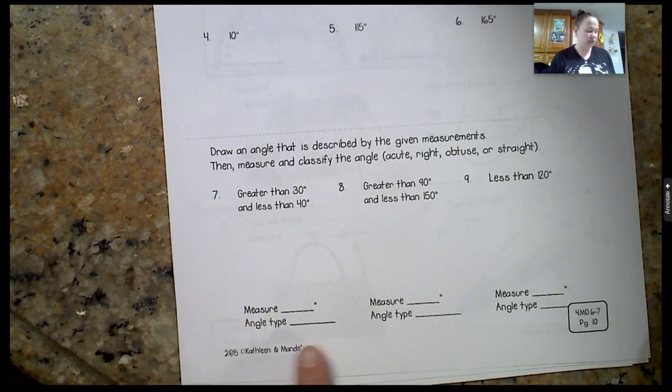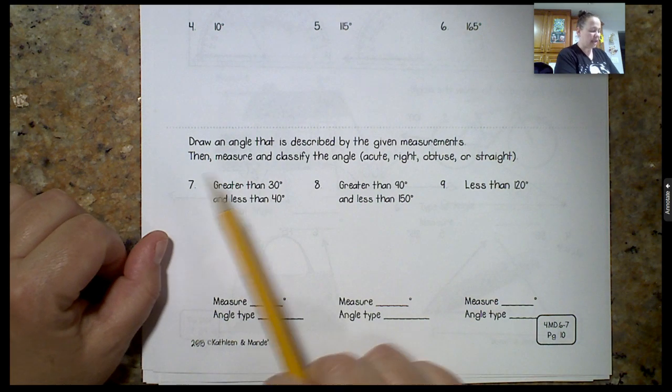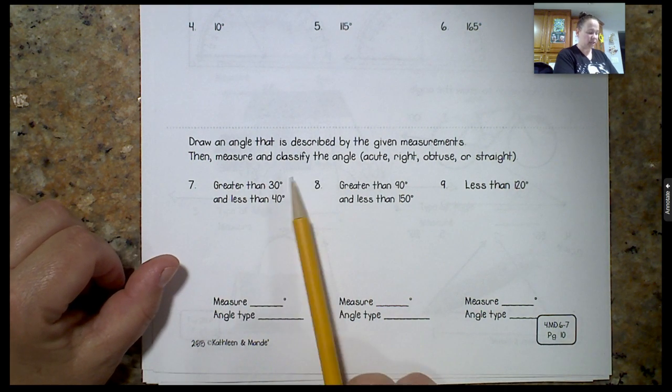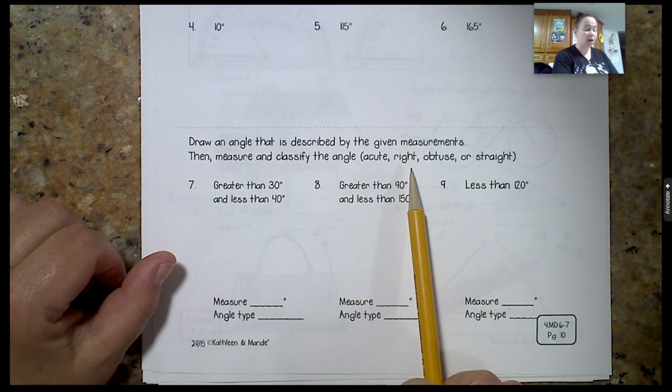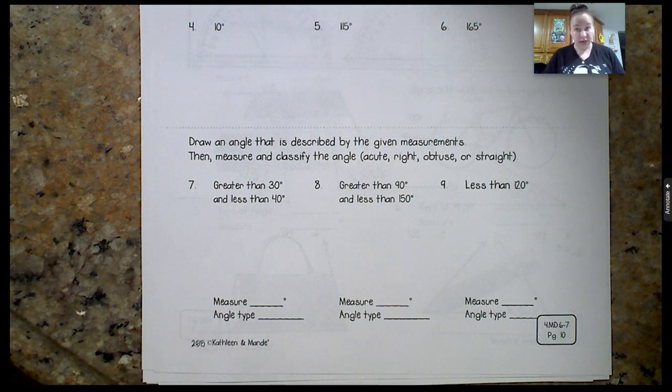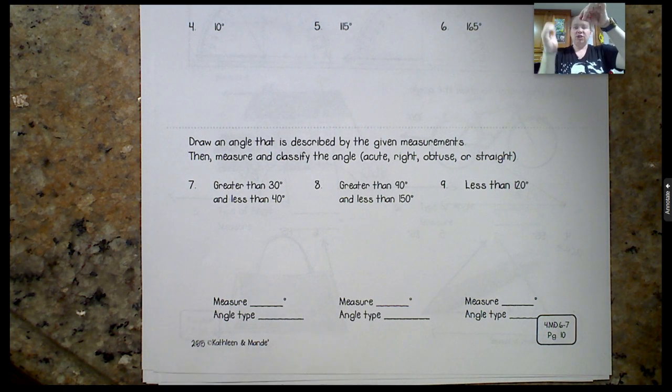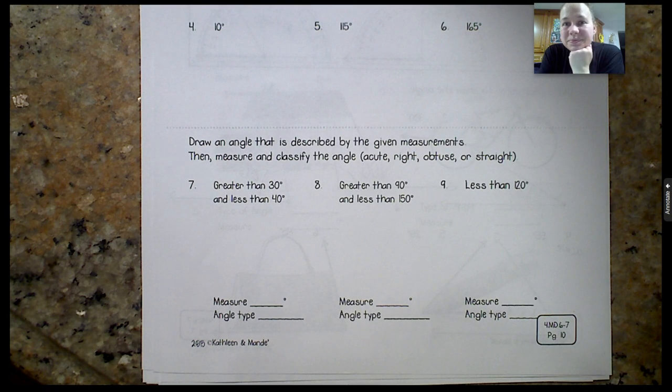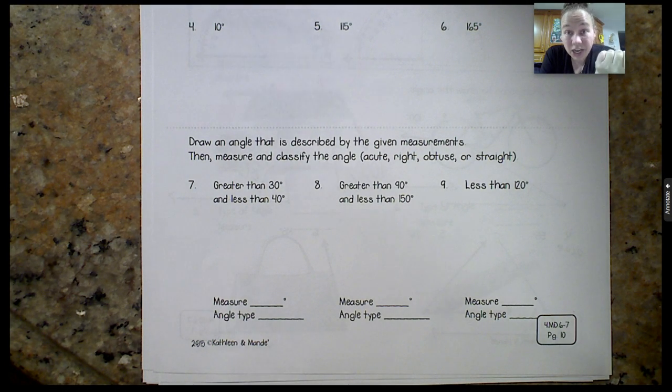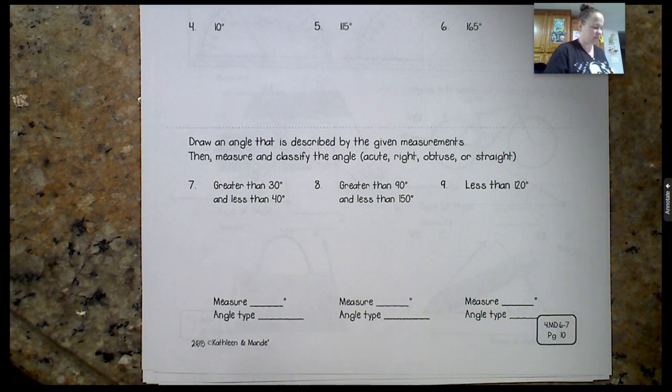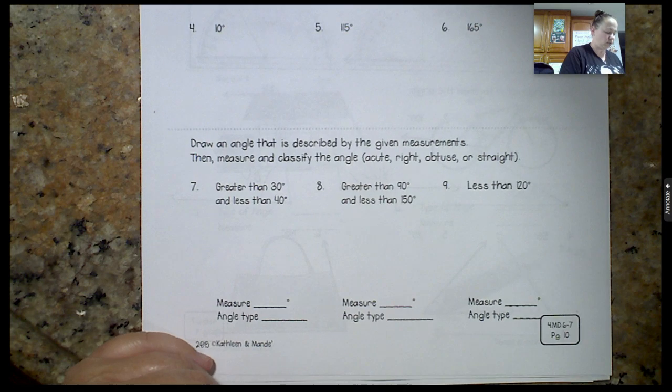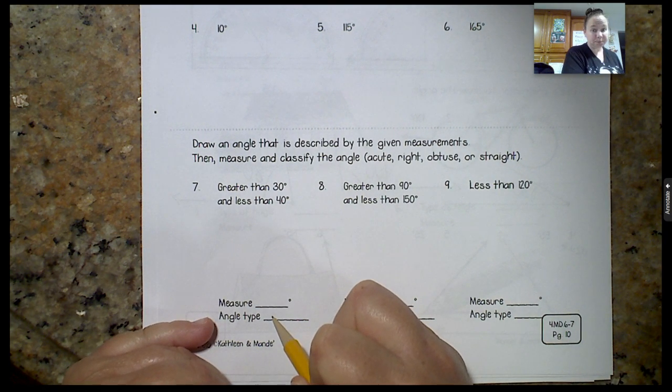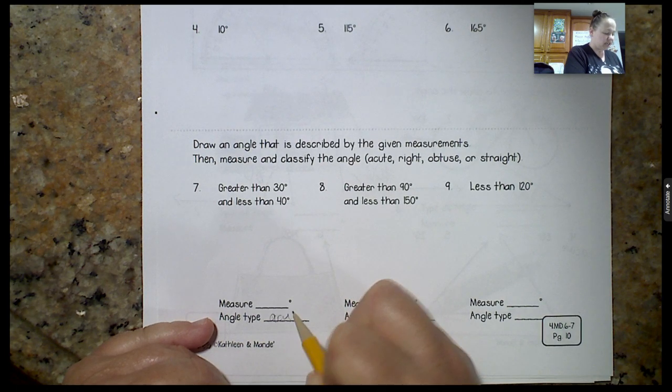Let's do one of these together because I know some of you might have a hard time with these directions. Draw an angle that is described by the given measurement. Then measure and classify the angle: acute, right, obtuse, or straight. We didn't talk about straight, but what do you think a straight angle would be? It would be a straight line, and it would measure 180 degrees. This angle, they want me to do one that's greater than 30 and less than 40. First of all, we know that's going to be what type of angle? That's going to be acute.